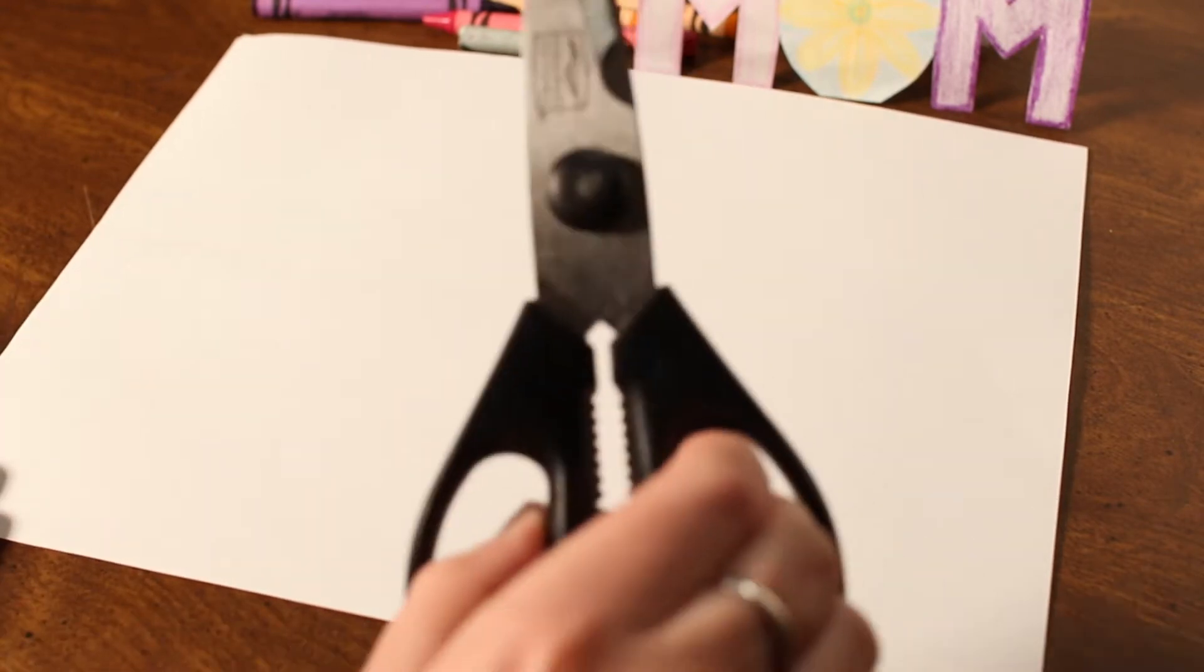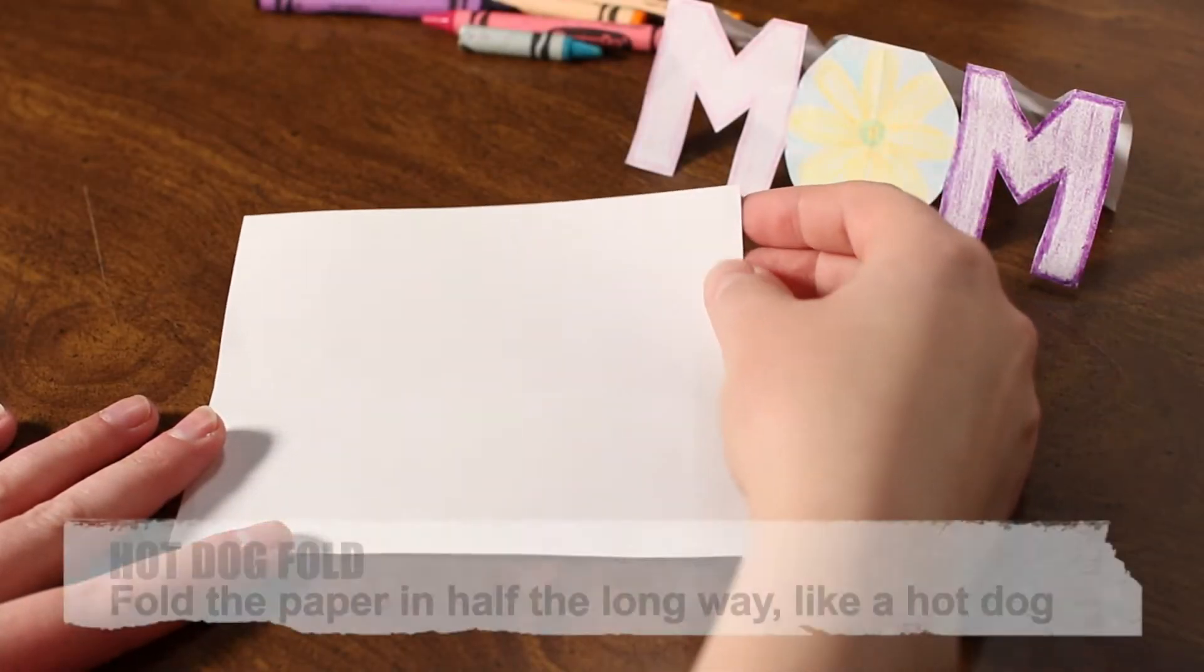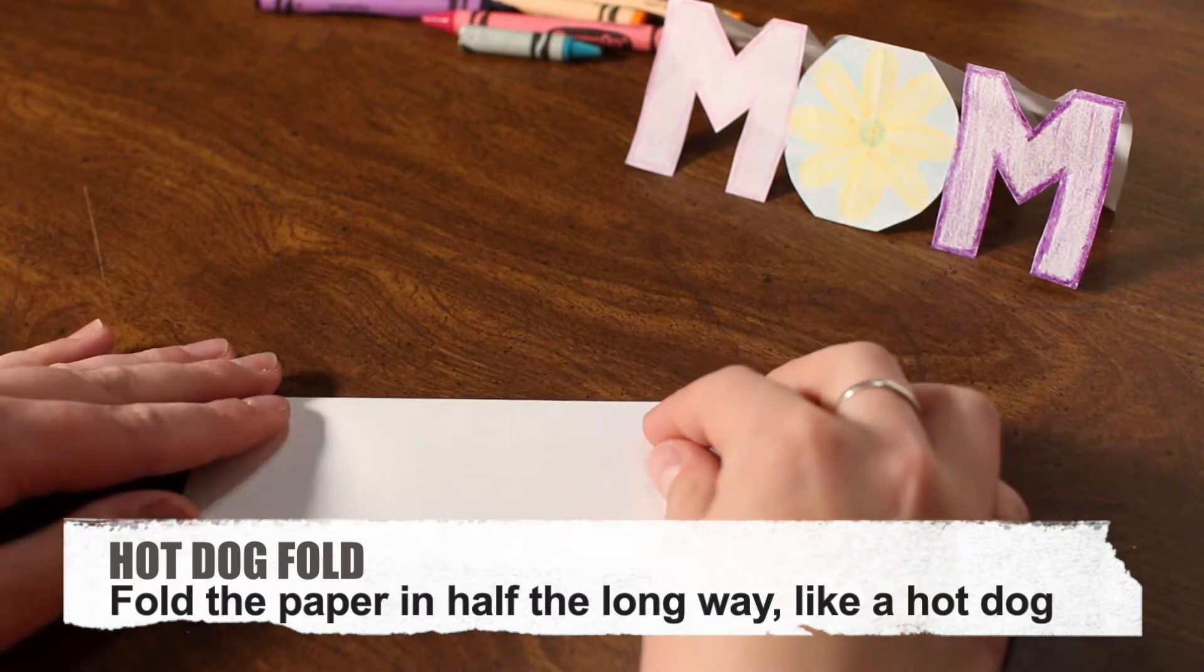All you really need is one quarter of your piece of paper. Now that we have our quarter sheet of paper, we just need to fold it in half hot dog style. That means lengthwise.